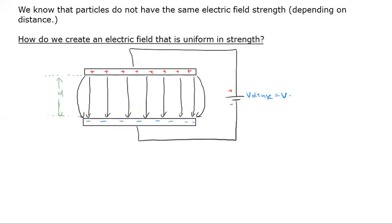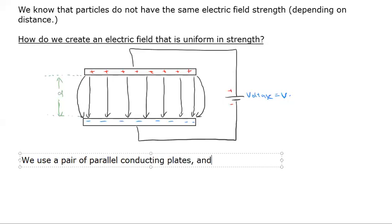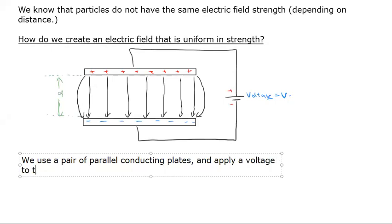Should it be clear? How do we create an electric field that is uniform in strength? Well, very simple. We use a pair of parallel conducting plates and apply a voltage to the plates. That's how we do it.